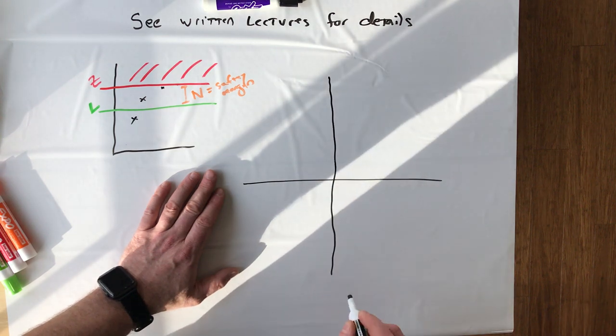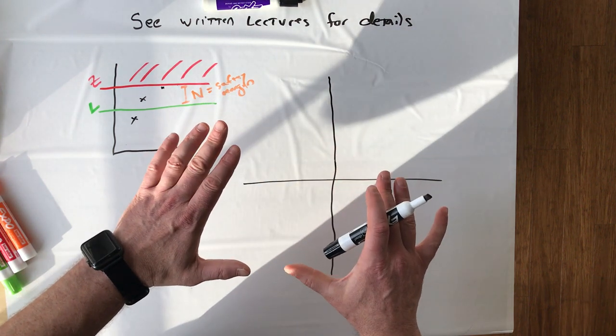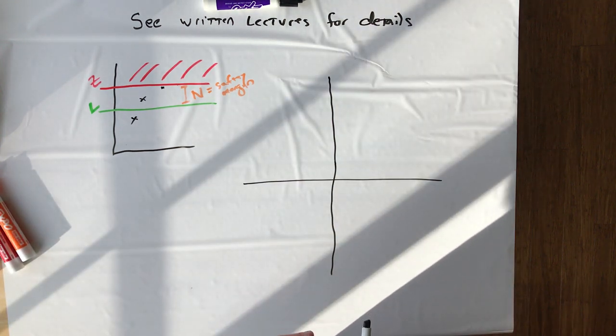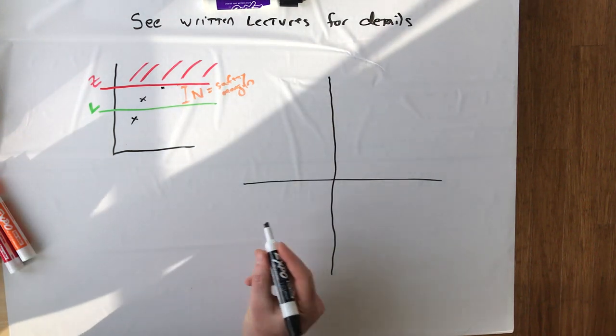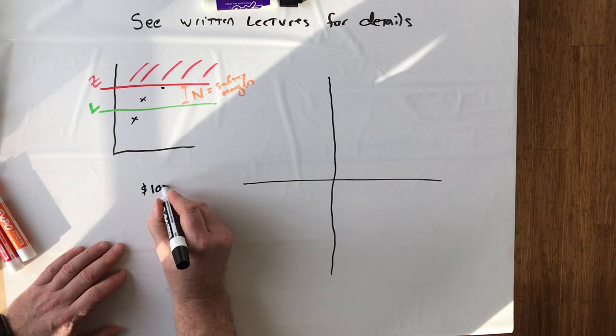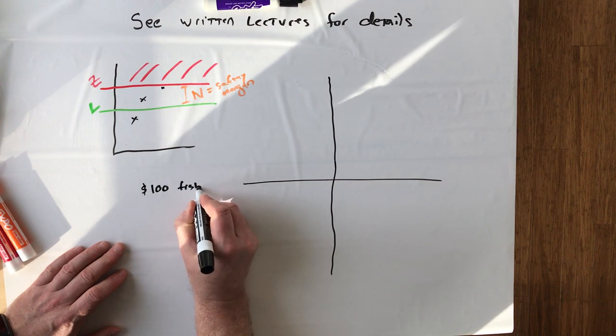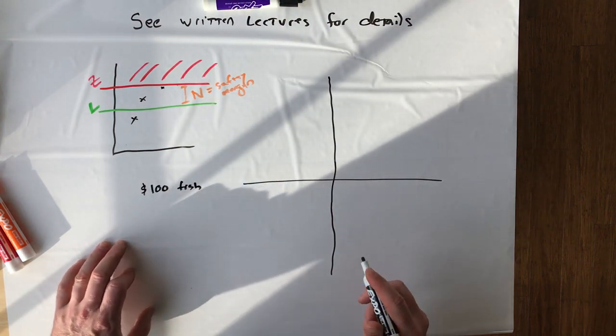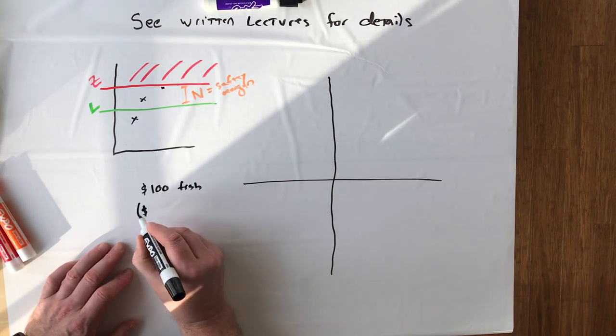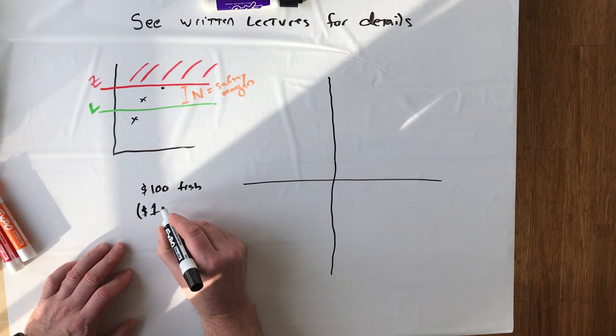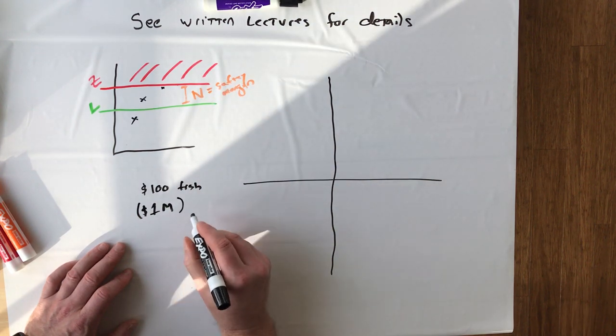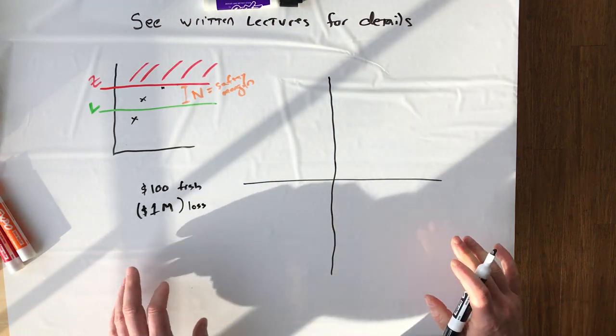And just to make this easier, I'm going to just put in a few arbitrary numbers, just so we can see it easier. So we're going to assume that every fish can be sold for a hundred bucks. And we're going to assume that the present value of the disaster where we go over Z is a million dollar loss. And we'll just assume that's for each of us.